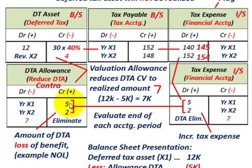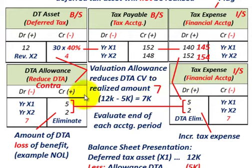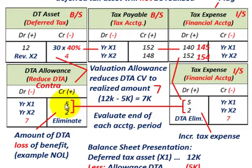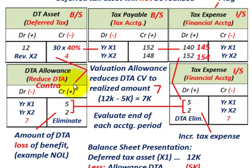For the balancing amount to the deferred tax allowance account, we debit our tax expense. Whatever credits or debits appear in your deferred tax asset allowance account, you're going to have a corresponding debit or credit to your tax expense on your income statement. For year X1, we had a $5,000 credit to the deferred tax asset allowance account, which increases your tax expense by $5,000. You're reducing your deferred tax asset through this allowance account and by doing that, you're increasing your tax expense.